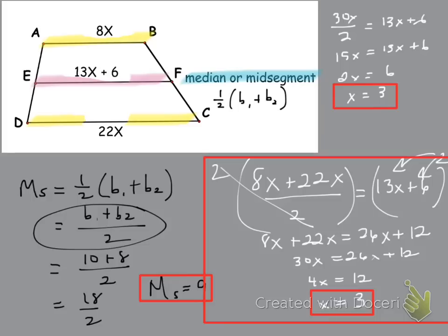And that's how we find that mid-segment. Again, it's like an average of base 1 and base 2. Okay, moving on.